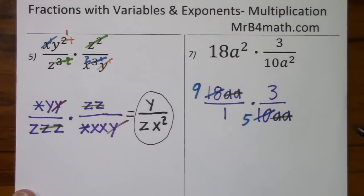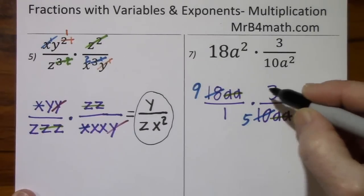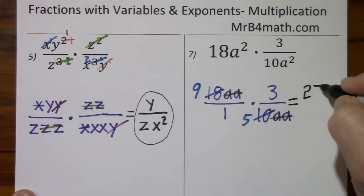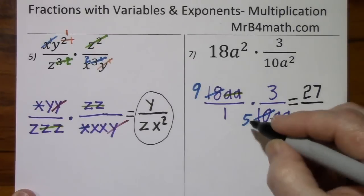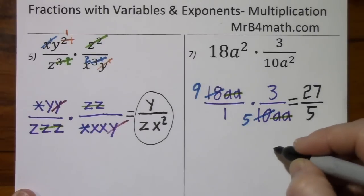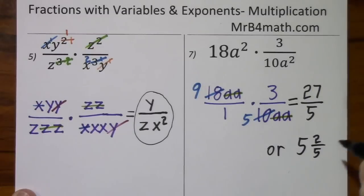We've simplified all that we can. Nine times three is 27 over five. Or this can be written as five and two fifths.